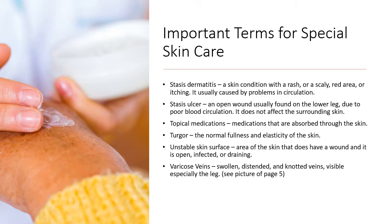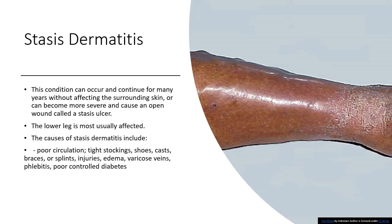Stasis dermatitis can occur and continue for many years without affecting the surrounding skin, or it can become more severe and cause an open wound called a stasis ulcer. The lower leg is usually affected. The causes of stasis dermatitis include poor circulation, tight stockings, shoes, casts, braces, or splints, injuries, edema, varicose veins, phlebitis, and poorly controlled diabetes.